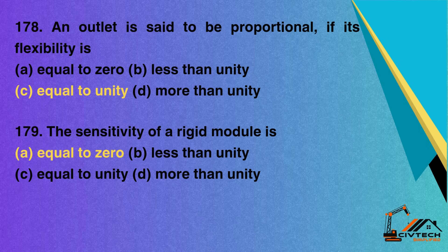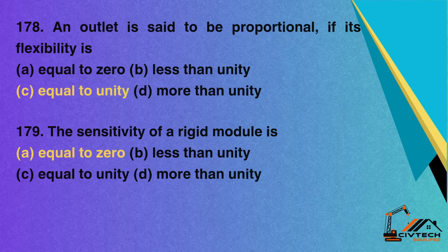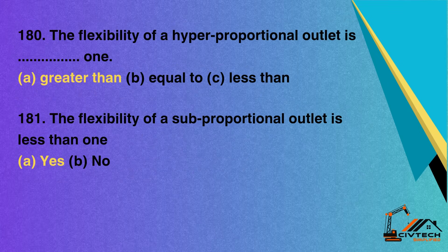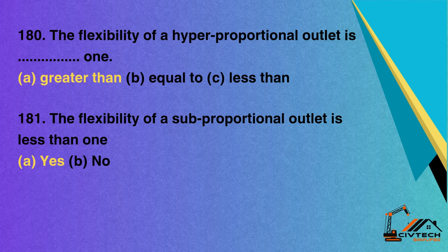Question 179: The sensitivity of a rigid module is — A. Equal to 0; B. Less than unity; C. Equal to unity; D. More than unity. Correct option: A. Equal to 0. Question 180: The flexibility of a hyperproportional outlet is — A. Greater than 1; B. Equal to 1; C. Less than 1. Correct option: A. Greater than 1. Question 181: The flexibility of a subproportional outlet is less than 1 — A. Yes; B. No. Correct option: A. Yes.